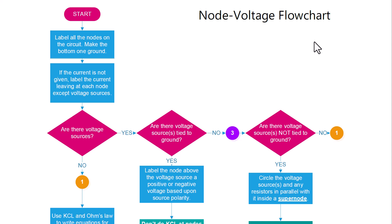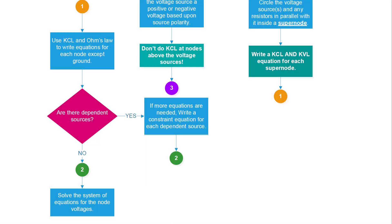Are there voltage sources? If yes, and the voltage sources are tied to ground, then you label the node above that voltage source as either a positive or negative voltage based upon the polarity of the voltage source. If there are voltage sources not tied to ground, then those will be super nodes, and you have to apply KCL and KVL at the super nodes. Note that if you have a voltage source tied to ground, you don't do KCL at the nodes above those voltage sources.